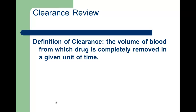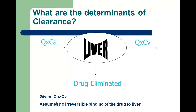For liver clearance in particular, you have blood coming into the liver at a certain flow rate Q, with an arterial concentration of drug entering the liver. Some drug may or may not be eliminated by the liver through metabolism — there can also be biliary clearance — and then blood exits with flow Q and a venous concentration.